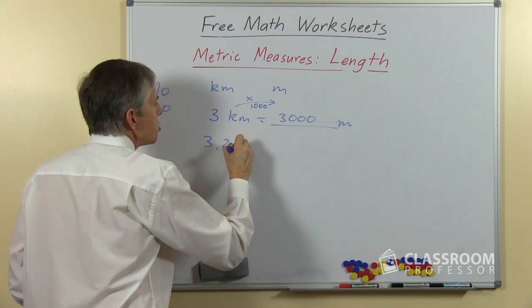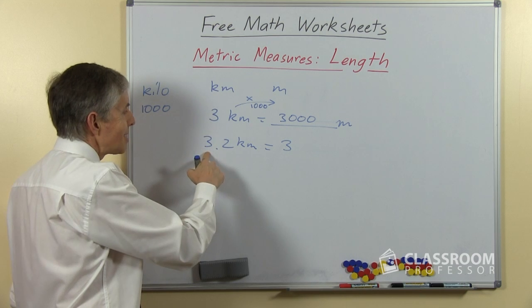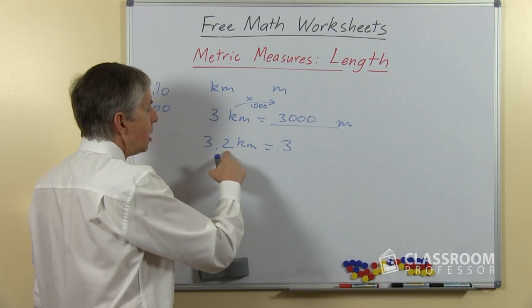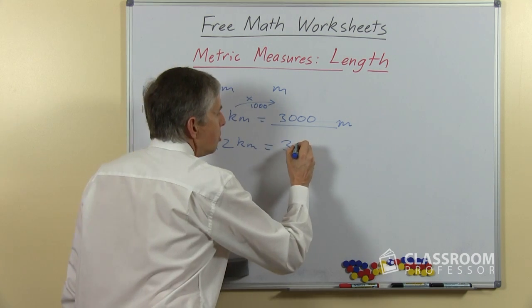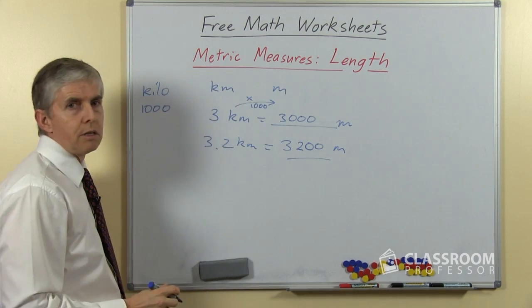If this was 3.2 kilometers, it would still be 3,000, wouldn't it? Because this is still 3 kilometers, that's 3,000. Where does the 2 go? The 2 must be in the hundreds place, so it's 3,200 meters.